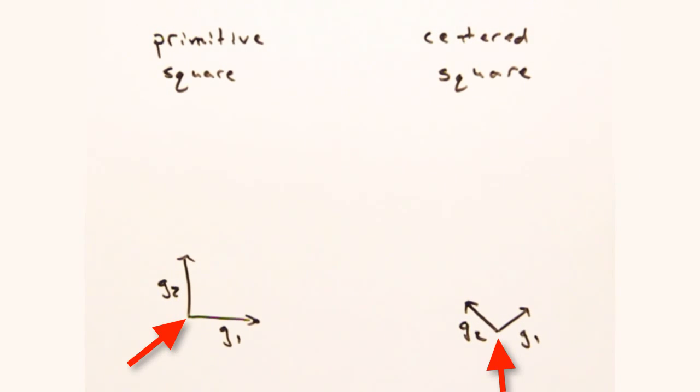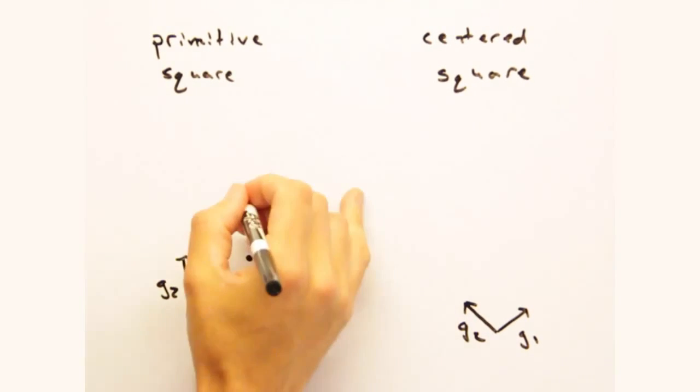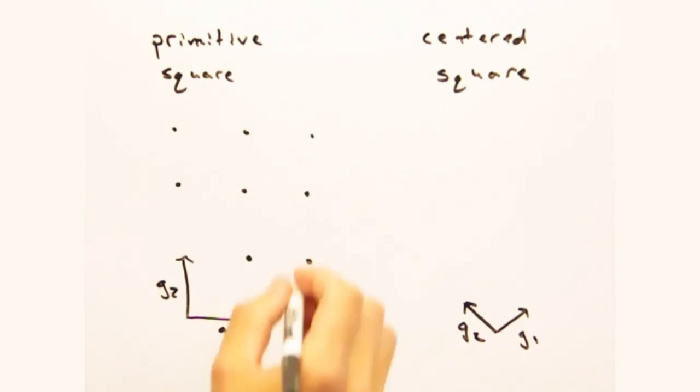Picking our origin here, we can use these g vectors to populate the reciprocal lattice for each cell. But of course we get different reciprocal lattices.